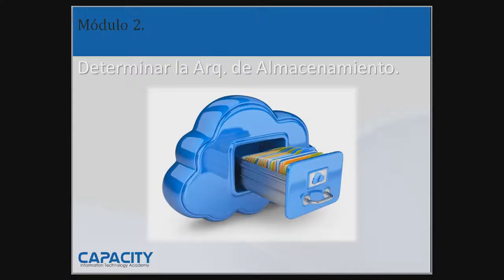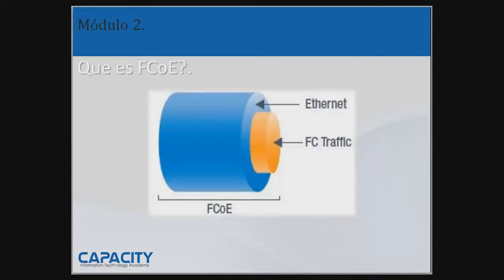Esta es otra opción que se debe tener en cuenta al momento de seleccionar la solución de almacenamiento. Aclarando lo que acabamos de hablar: Fibre Channel over Ethernet, ¿qué es y para qué se utiliza? FCoE es un estándar T11 que transporta marcos de canal de fibra encapsulados mediante Ethernet mejorado. Fibre Channel over Ethernet está diseñado para facilitar la convergencia de redes y la expansión rentable de la red de área de almacenamiento SAN en centros de datos. Es relativamente un nuevo protocolo de almacenamiento en el mercado.